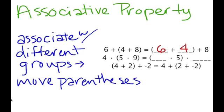Where you've got 4 times the quantity of 5 times 9, well we could do 4 times 5 instead, making that 20, and then do 20 times 9. In the last example, 4 plus 2 plus negative 2 — if we group or associate the 2 with the negative 2, that equals 0 and then we just add the 4. So the associative property is about associating with different groups.